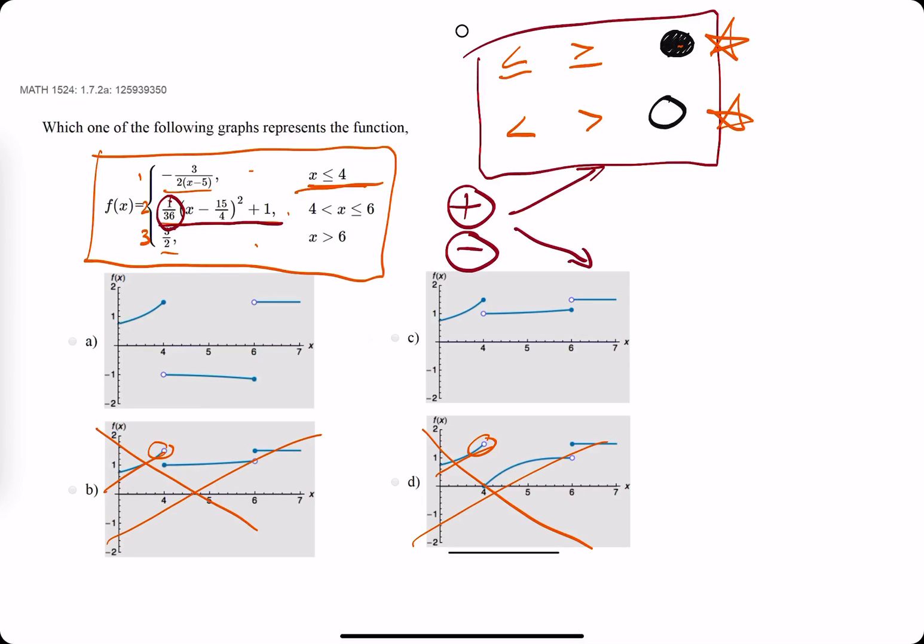And again, this second function piece represents the middle piece of the graph. So it looks like c—it's very faint, but it's slightly increasing—while a is decreasing.